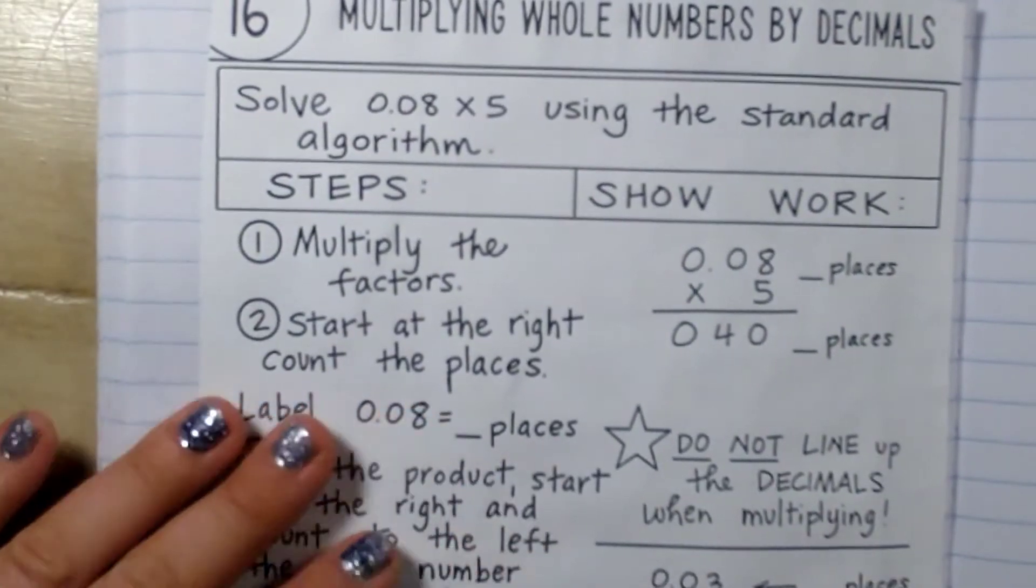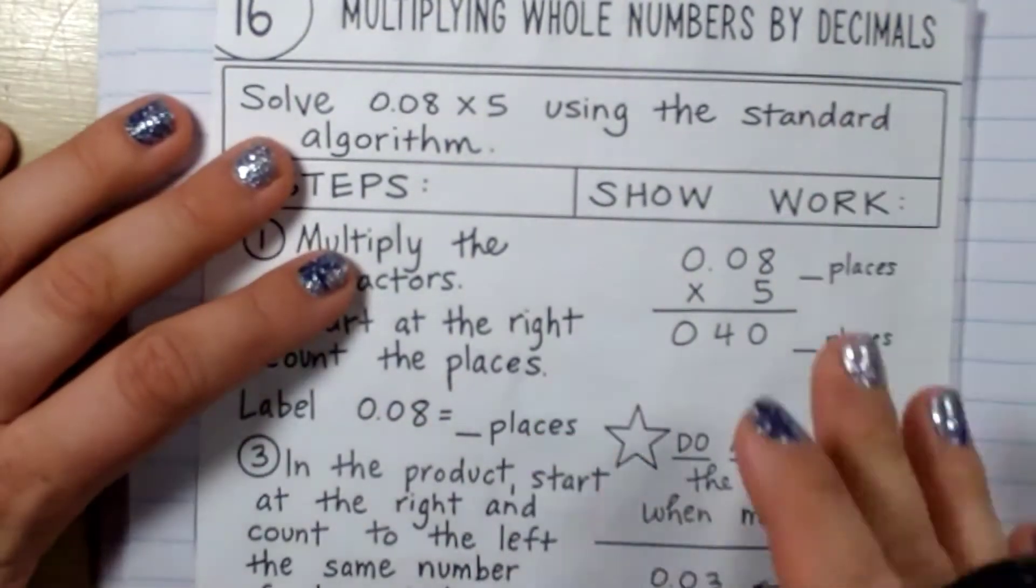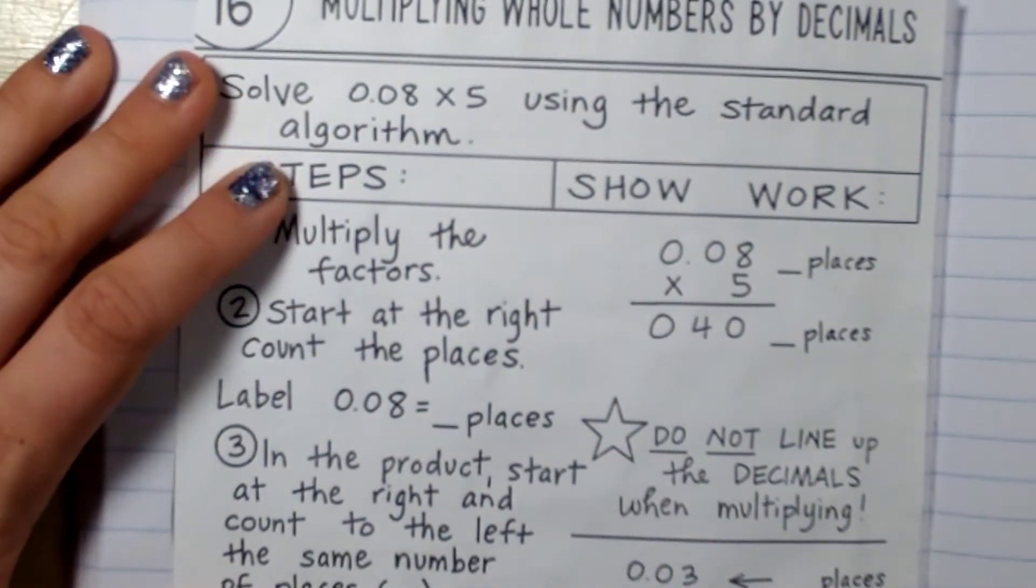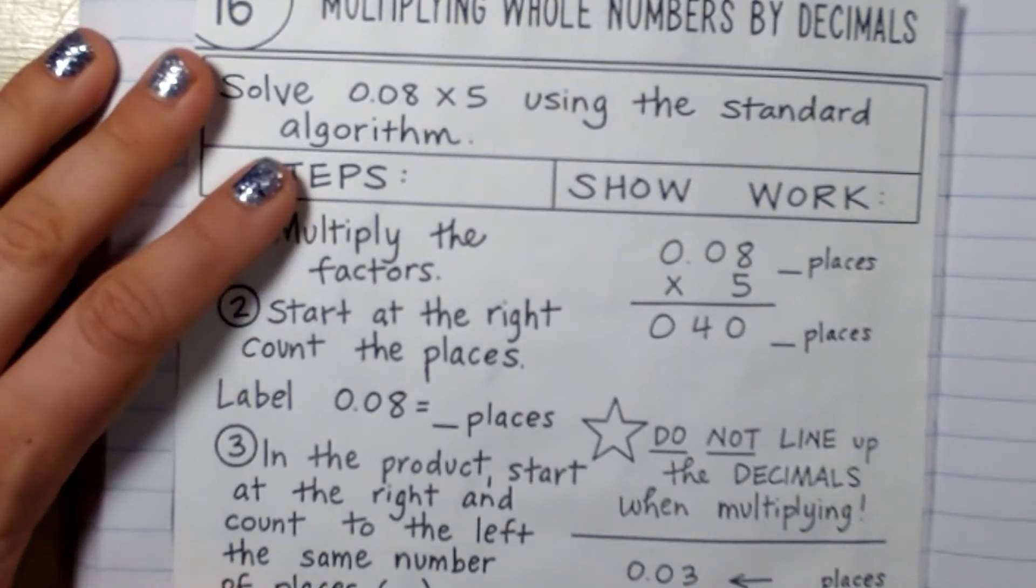Okay, yesterday we did models and now we're going to move on to the old-fashioned way which is our standard algorithm, and it is just adding up decimal place values, numbers of decimal places.